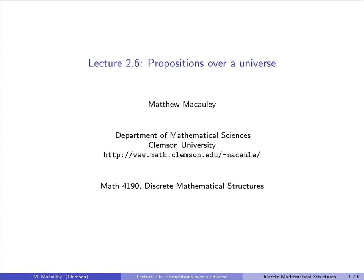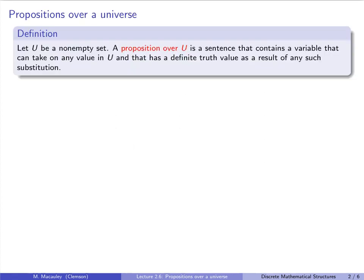Welcome to lecture 2.6: Propositions over a Universe. Let's start with the definition. Let U be a non-empty set — think like the real numbers, the rational numbers, or the integers. A proposition over U is a sentence that contains a variable that can take on any value in U and that has a definite truth value as a result of any such substitution. We may write P(u) to denote the truth value of P when we substitute in u.